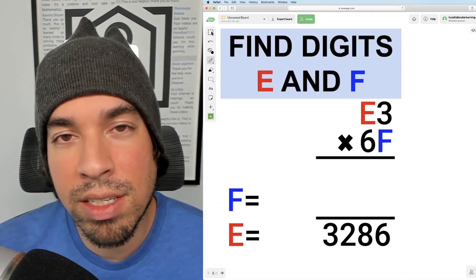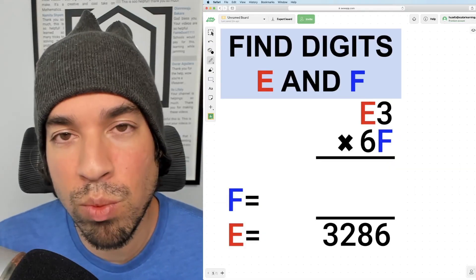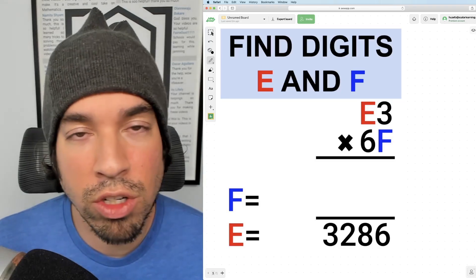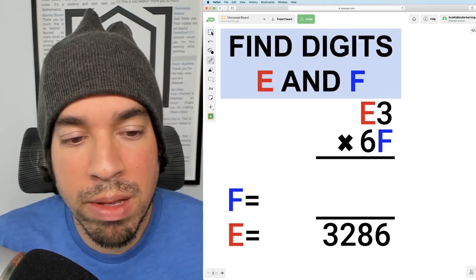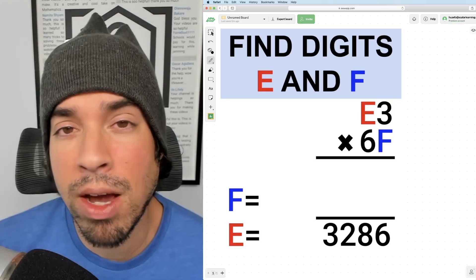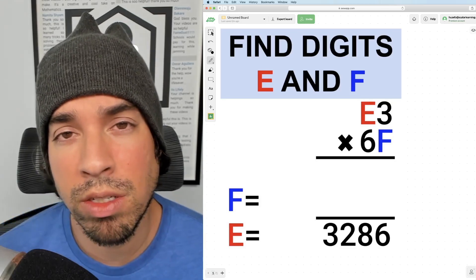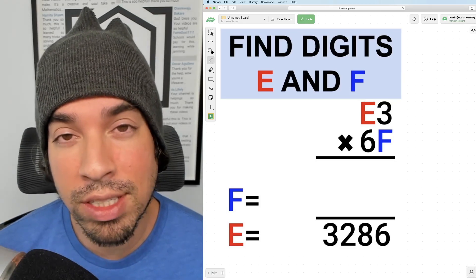So with something like this, yes, we could figure out randomly what two numbers multiply to 3,286. We could just start randomly plugging in values for E and F and keep calculating like that. But remember, it's all about strategy and efficiency in these math problems.